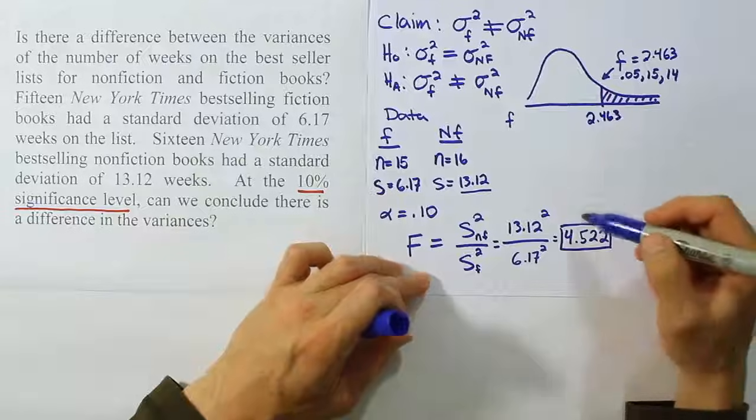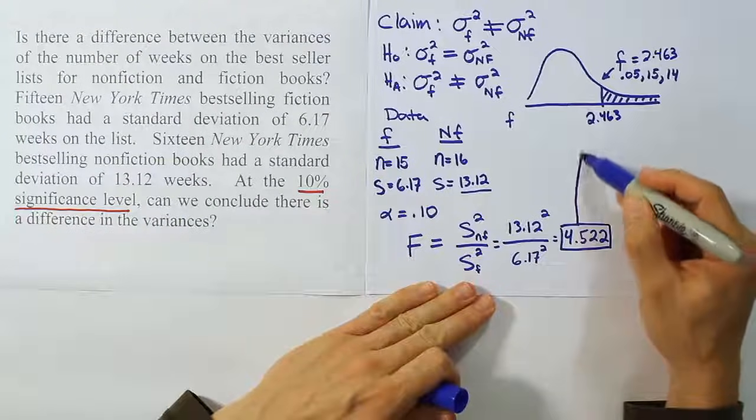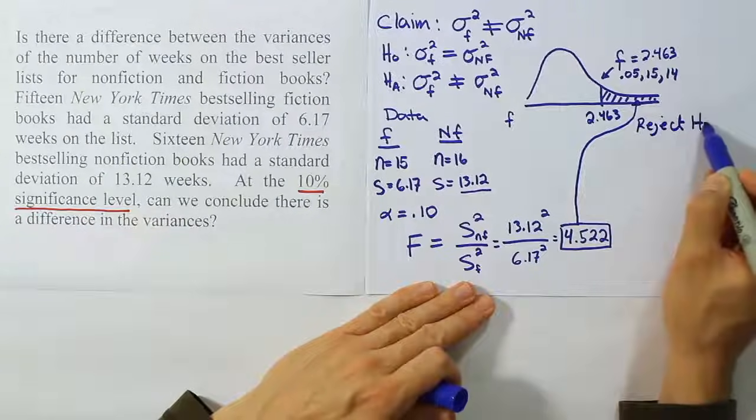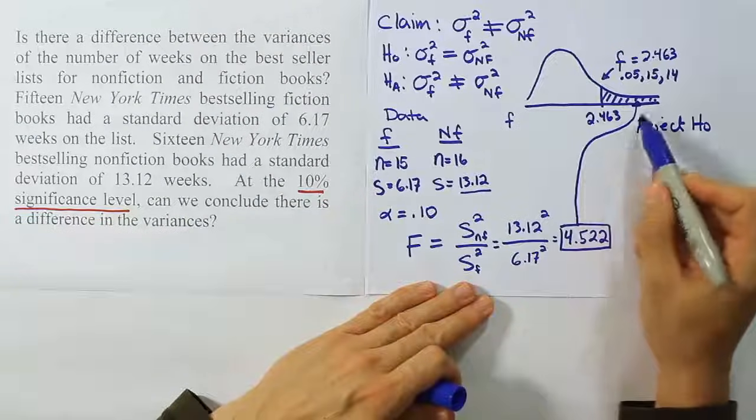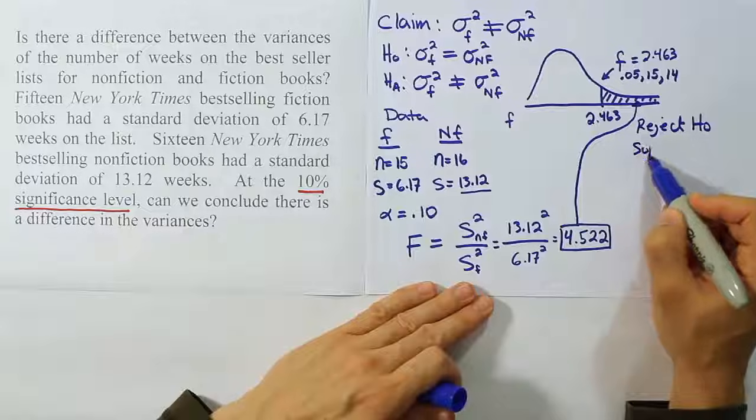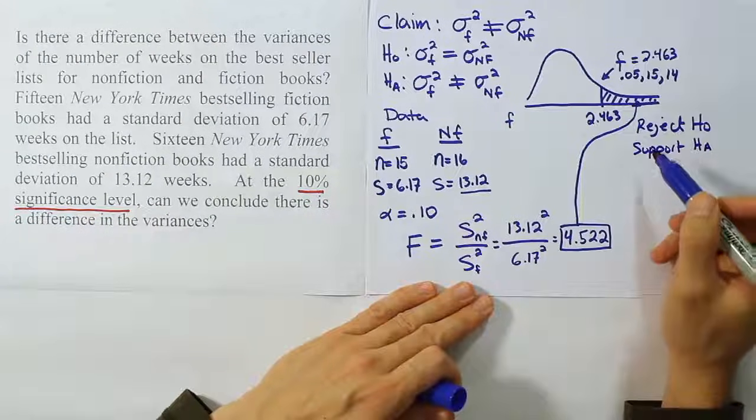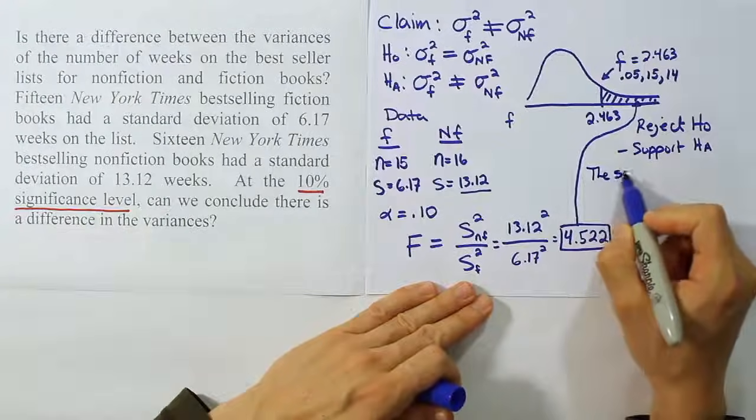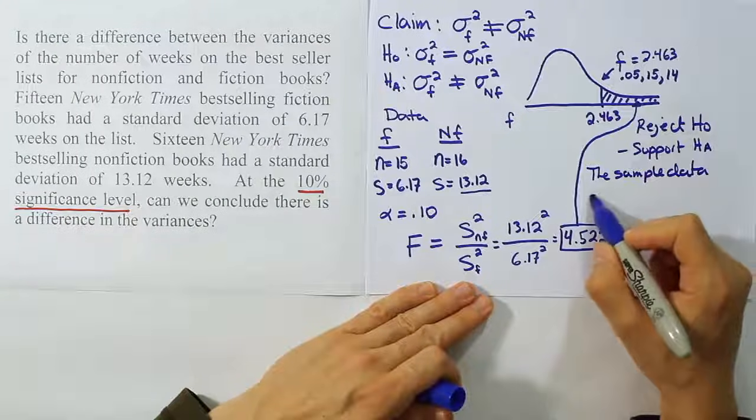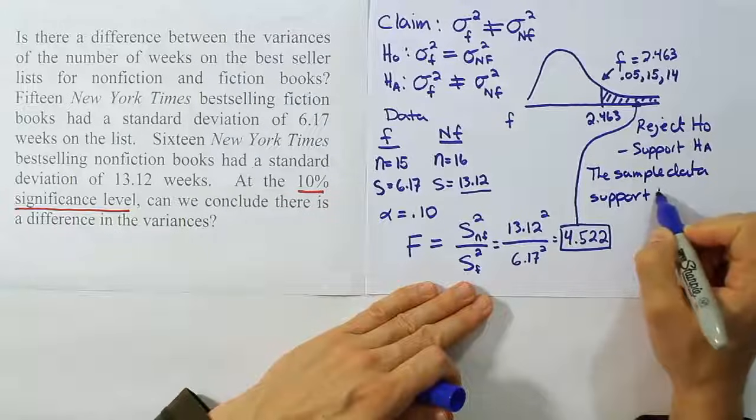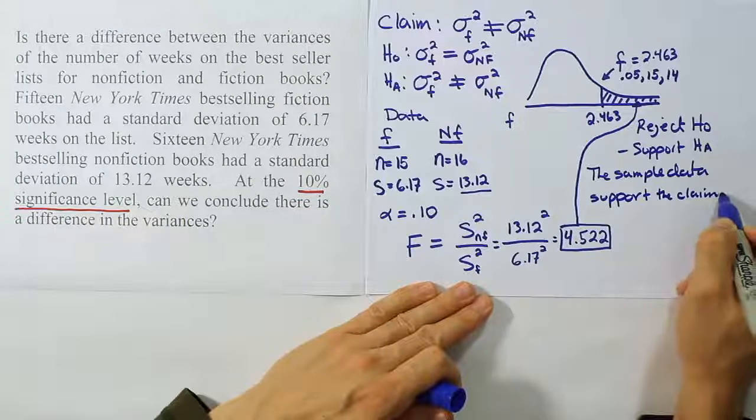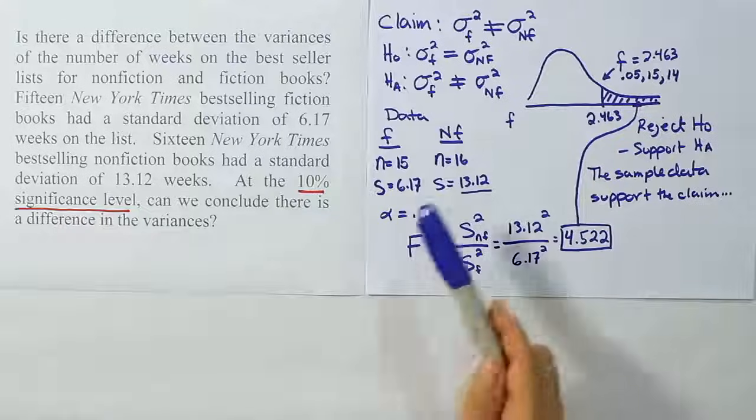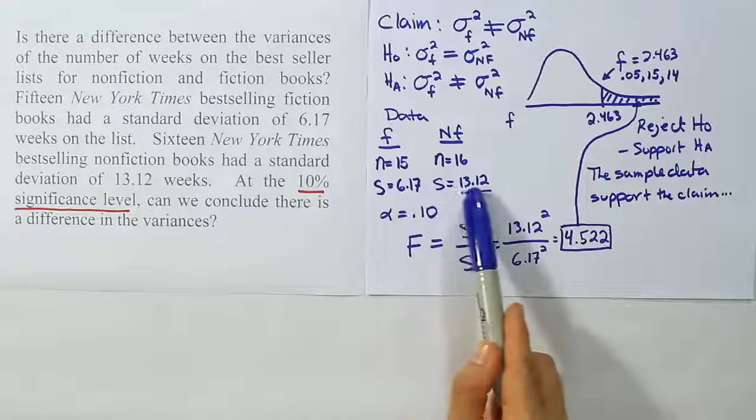Now that that's our critical value, we can look at our F test statistic and see that it lands in the tail here. So we're going to conclude that we should reject H₀. It's very similar to our traditional method of hypothesis testing. Once this lands in the rejection region, you say to reject H₀, and therefore to support Hₐ. Now looking at our claim, we see our claim is Hₐ. So we're going to use this terminology. We'll say the sample data support the claim. And the claim, of course, here is that the two population variances are not equal, which we could have suspected because of the fact that there's such a large difference between the sample standard deviations.